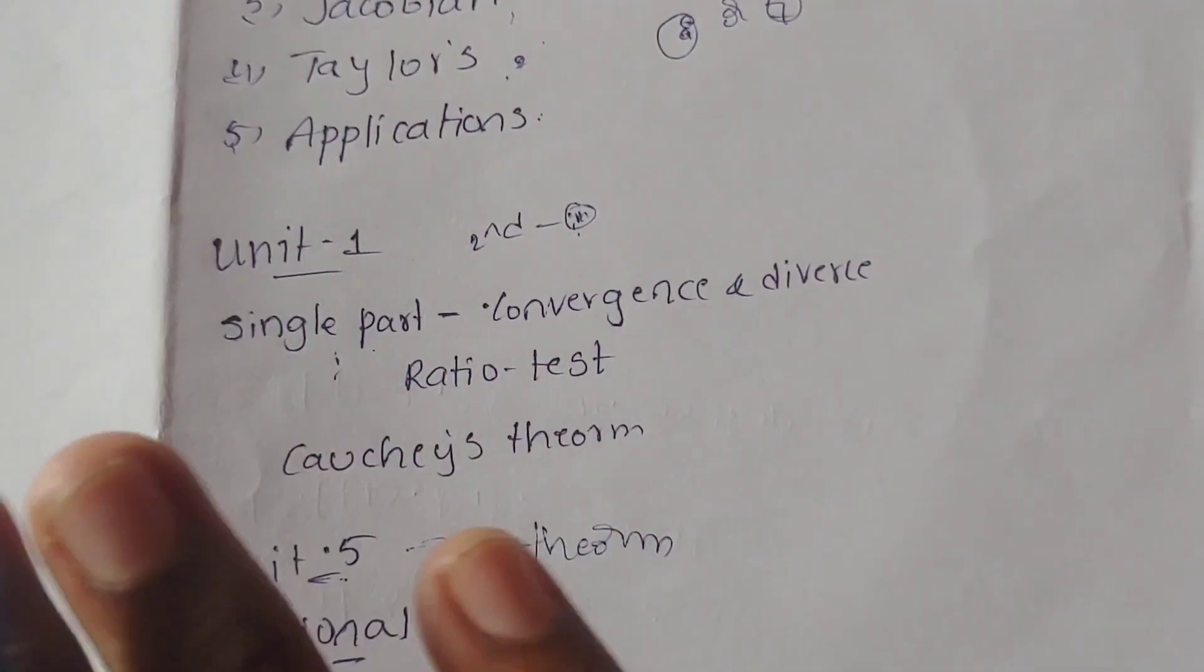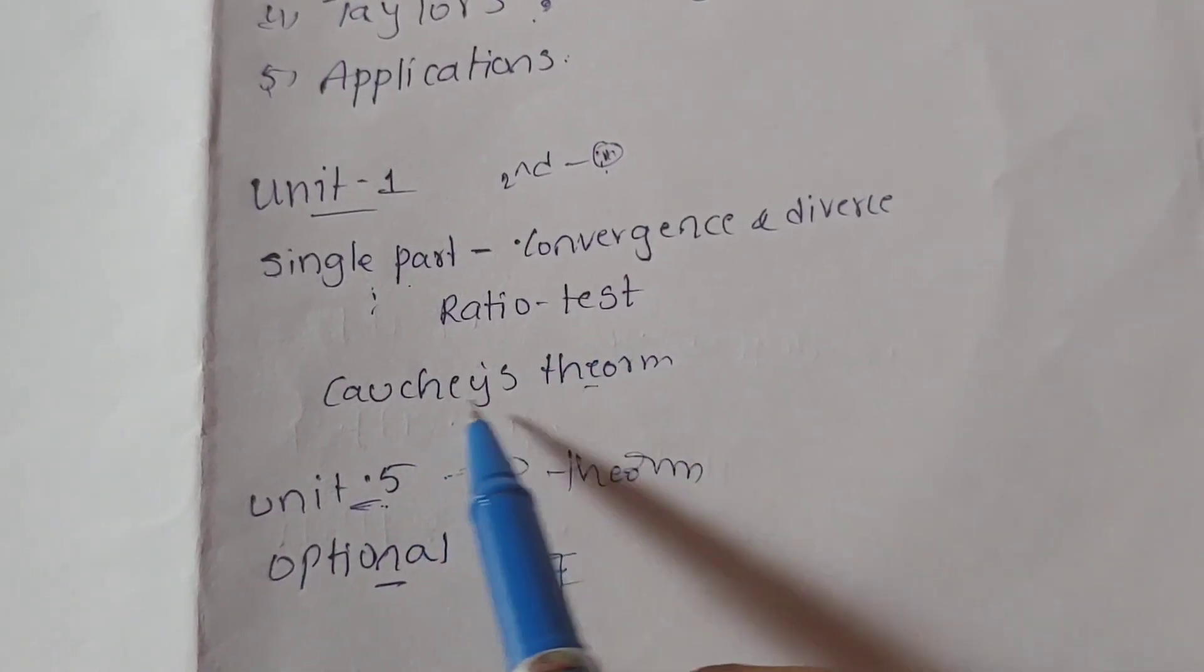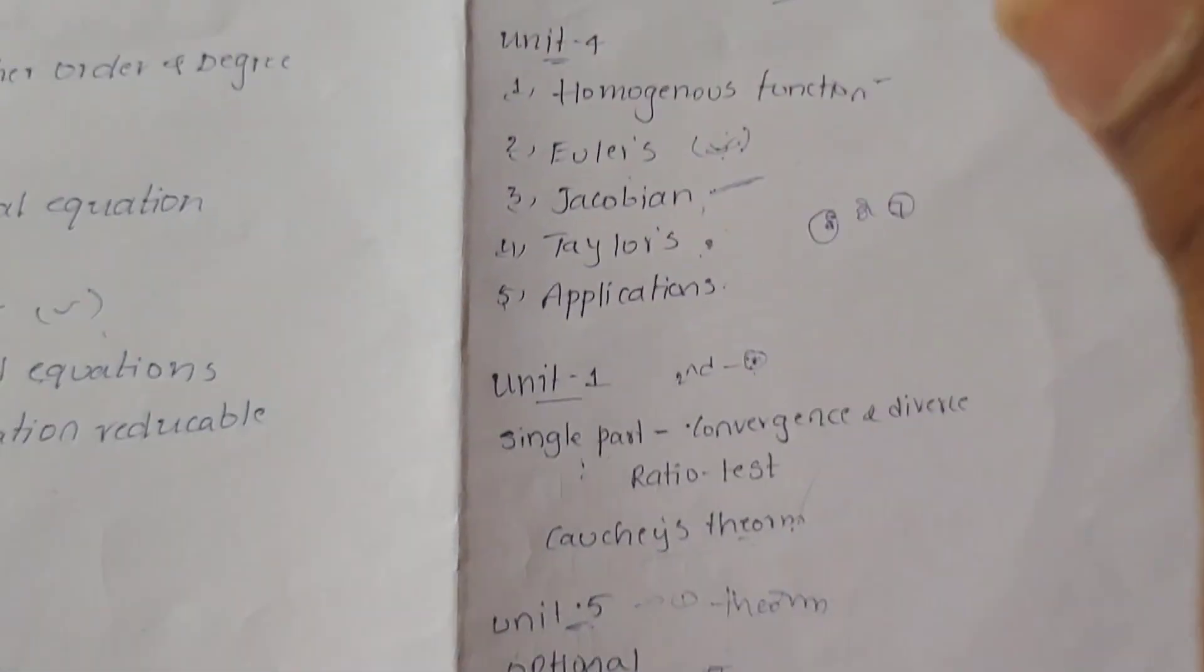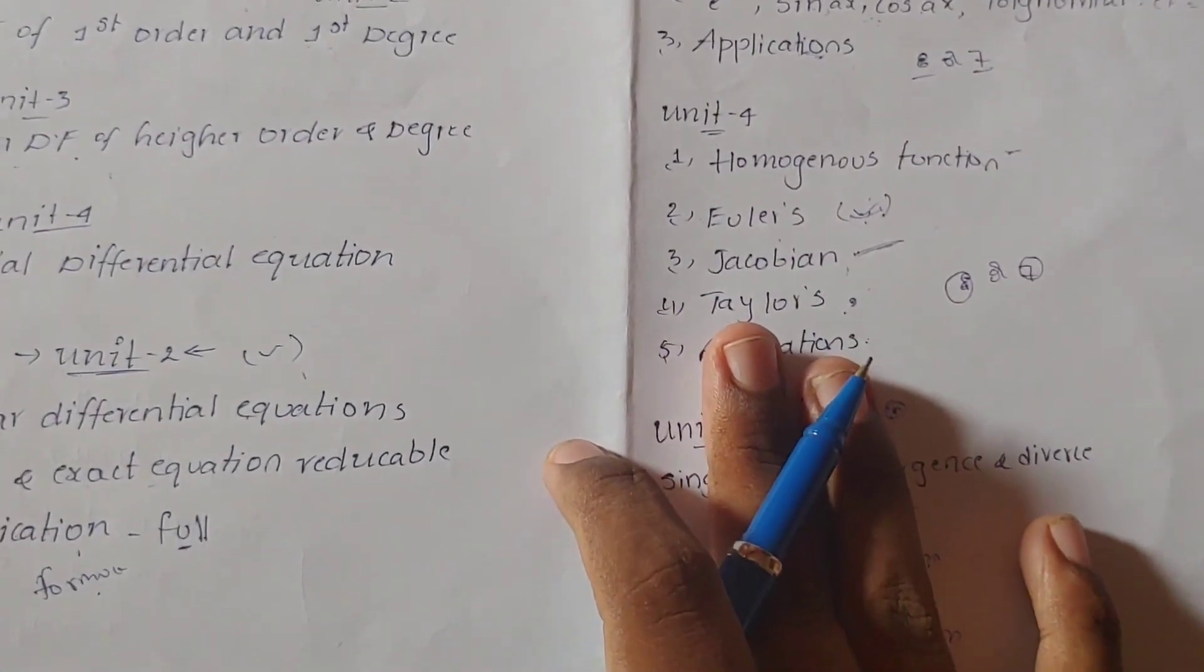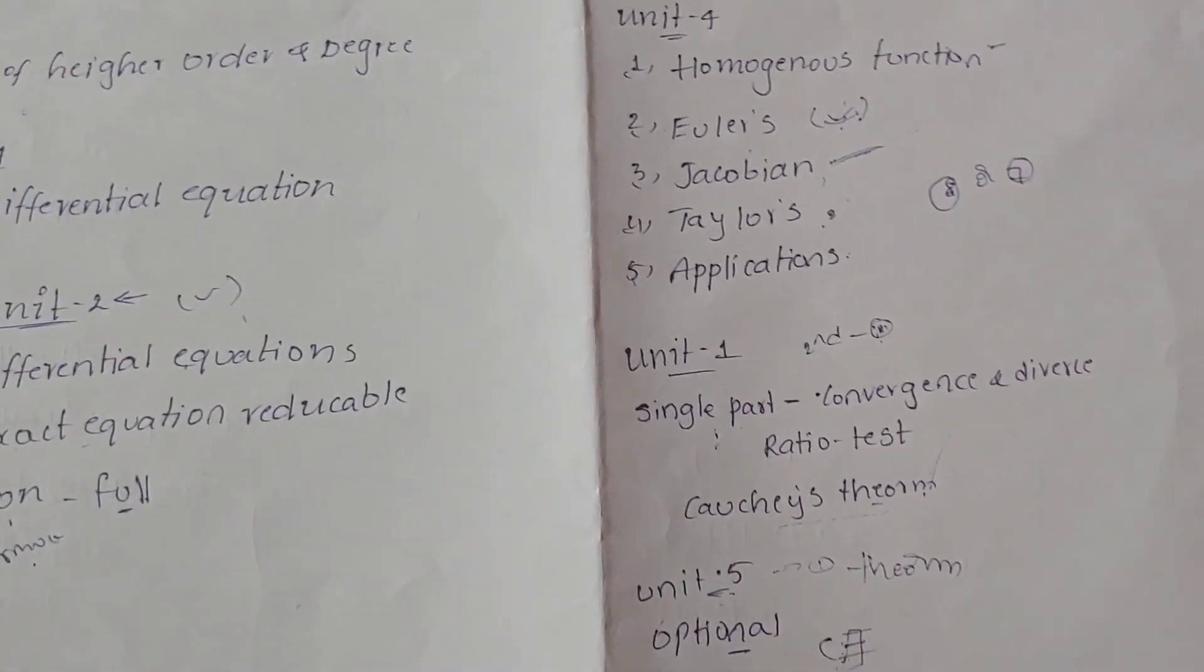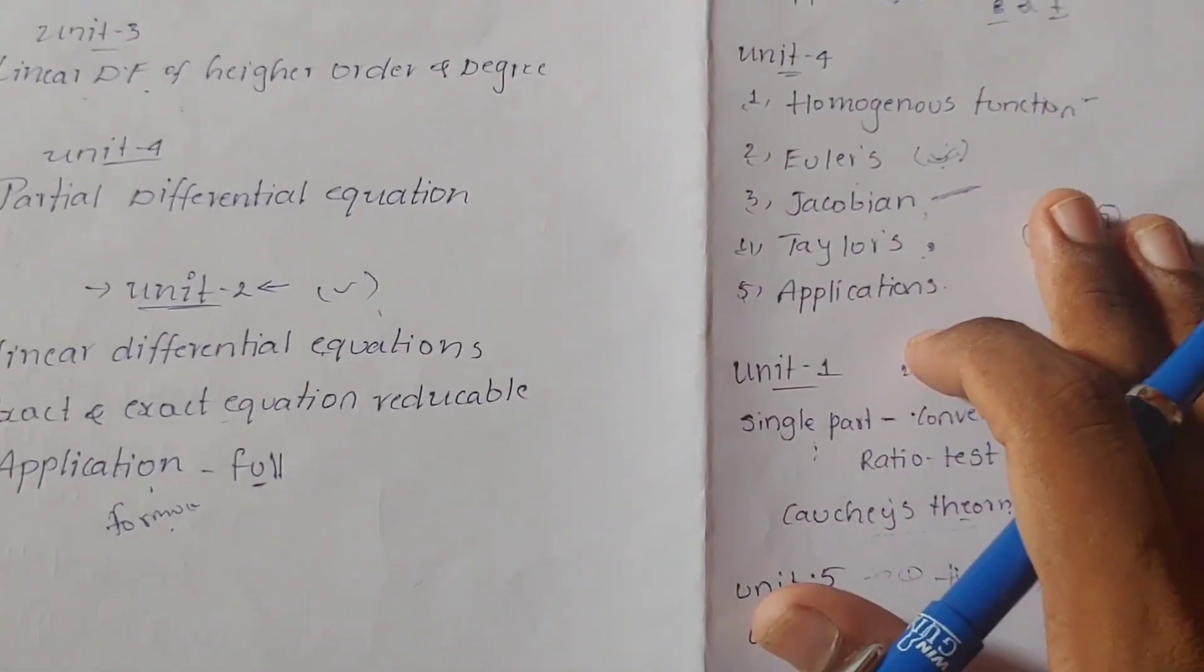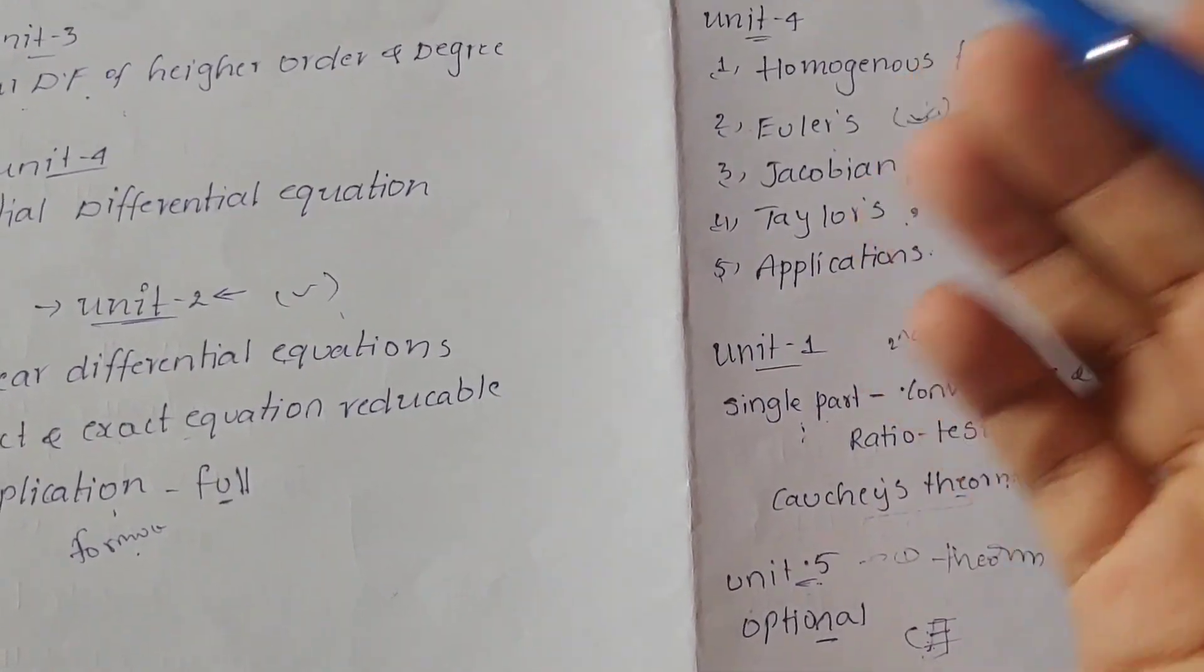Single part is convergence and divergence, ratio test, Cauchy's theorem. Unit 4 and Unit 5, you guys may prepare. Important topics in M1. Thank you to our teacher. Feel our classroom. A problem I can give as a guess. Up to now we did the part.